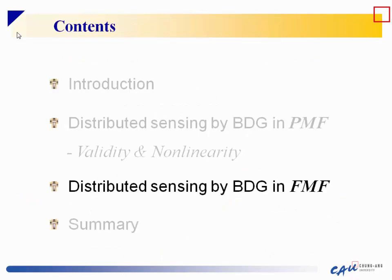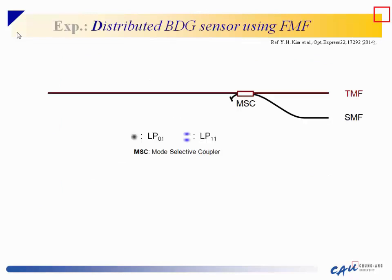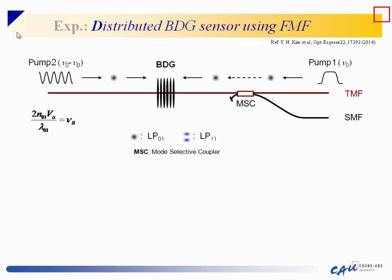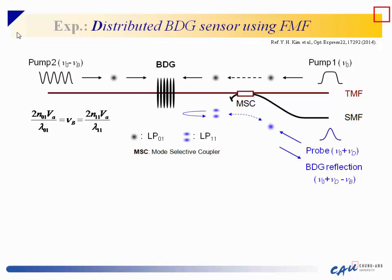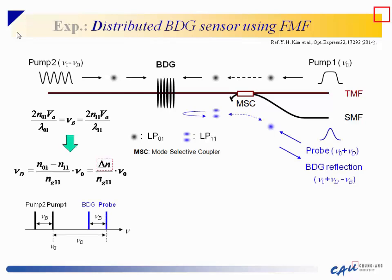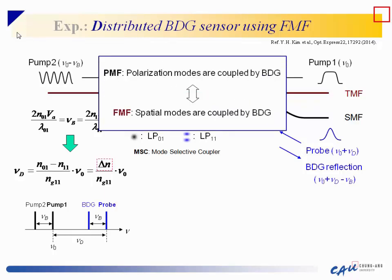The next section covers distributed sensing by BDG in few-mode fiber. In few-mode fiber, Brillouin dynamic grating can be operated similarly to polarization-maintaining fibers. For example, BDG can be generated using the LP01 mode and reflected by the LP11 mode. The resulting BDG frequency equation has almost the same form, but here delta N represents the index difference between different spatial modes rather than polarization birefringence.